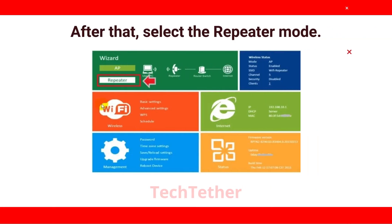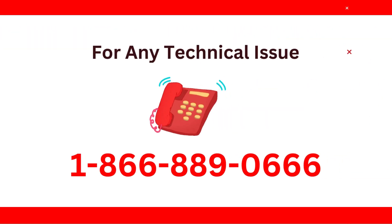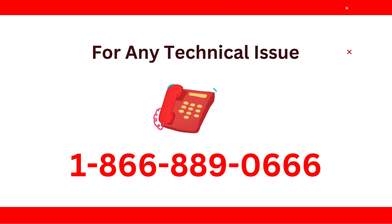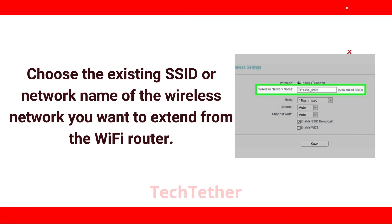After that, select the repeater mode. Choose the existing SSID or network name of the wireless network you want to extend from the Wi-Fi router.